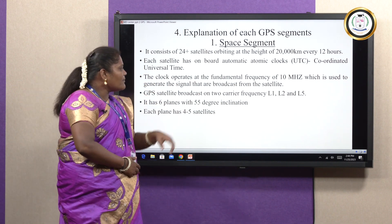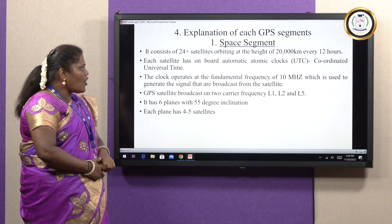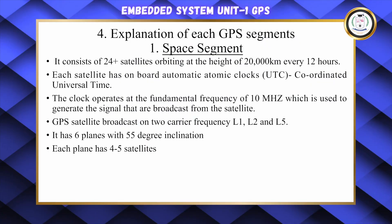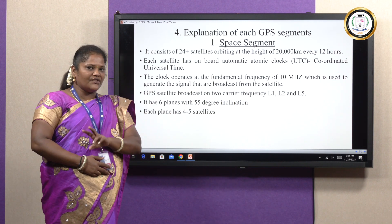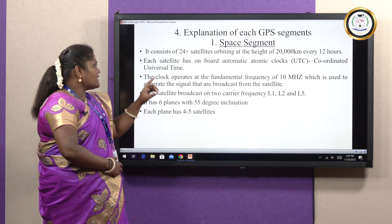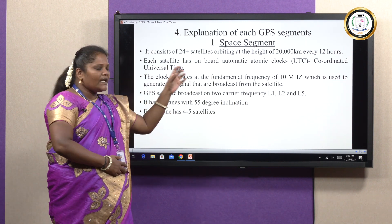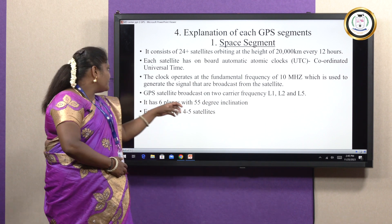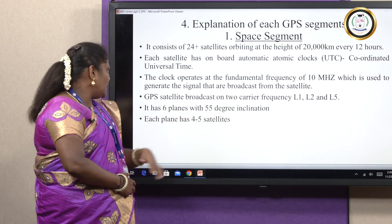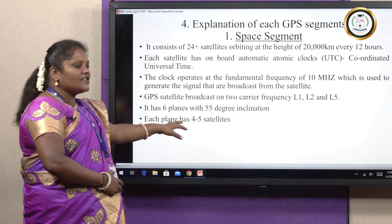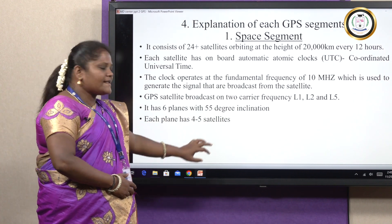The clock operates at a fundamental frequency of 10 megahertz, which is used to generate signals broadcast from the satellite. GPS satellites broadcast on two carrier frequencies: L1 and L2. The constellation has six planes with 55-degree inclination, and each plane has four to five satellites.